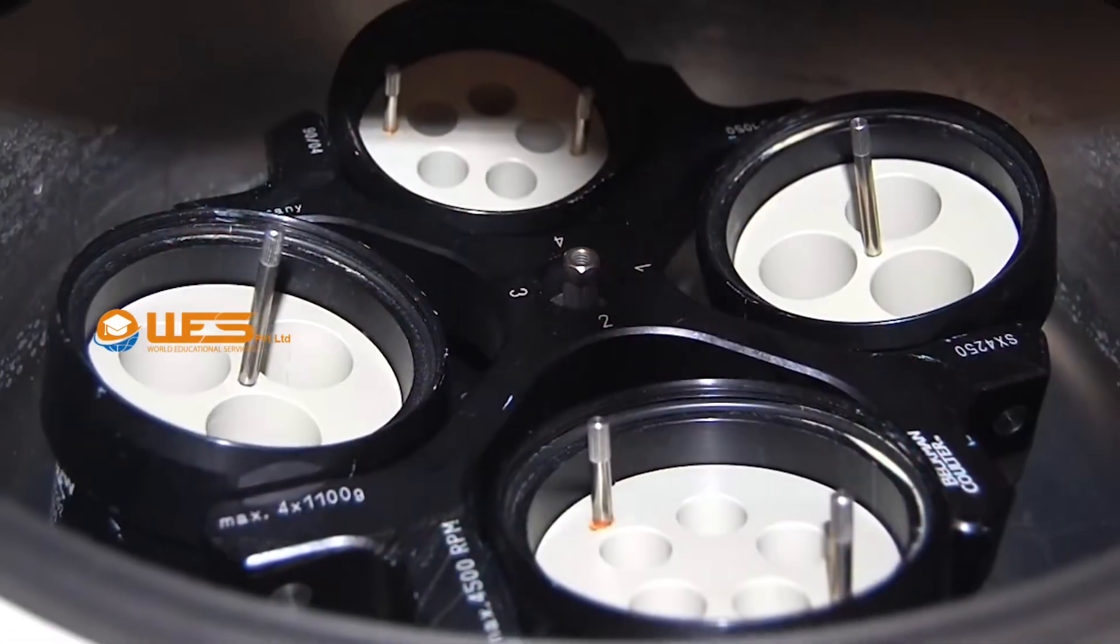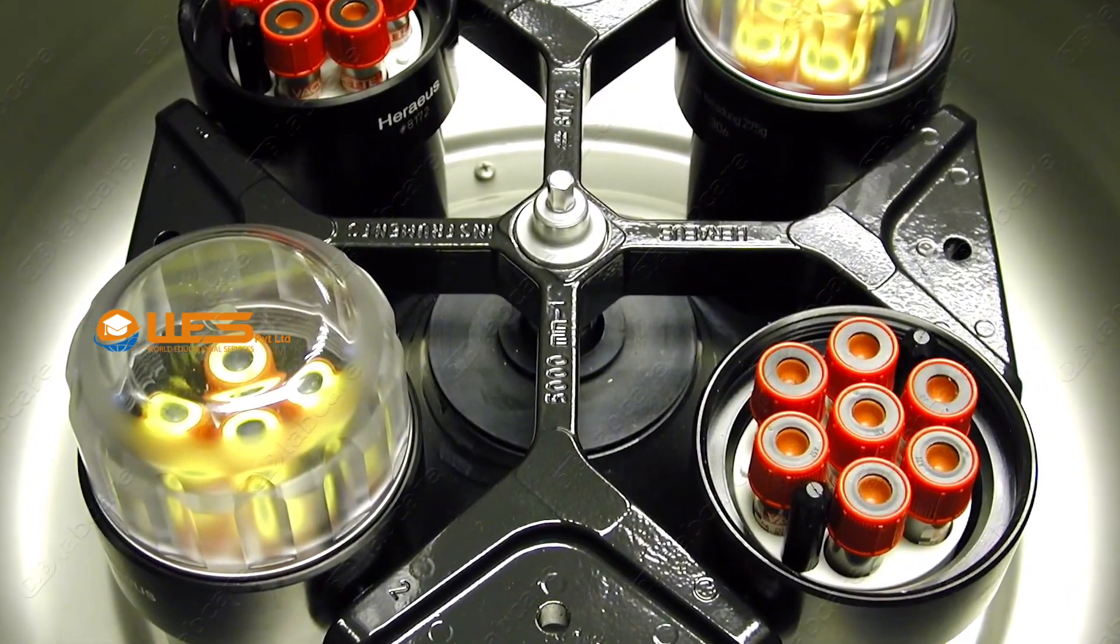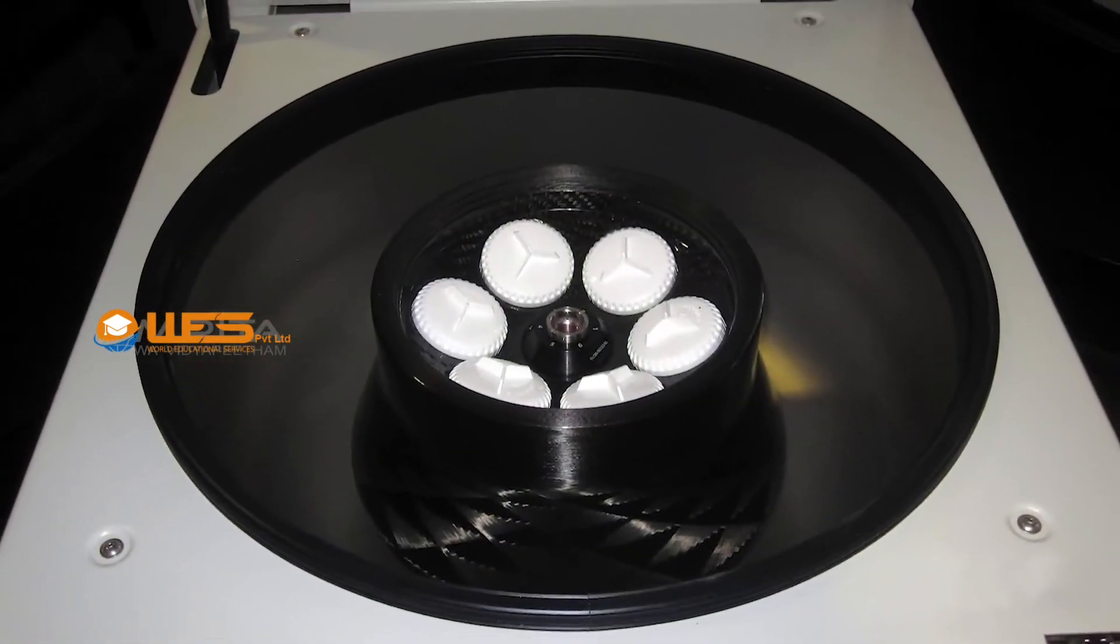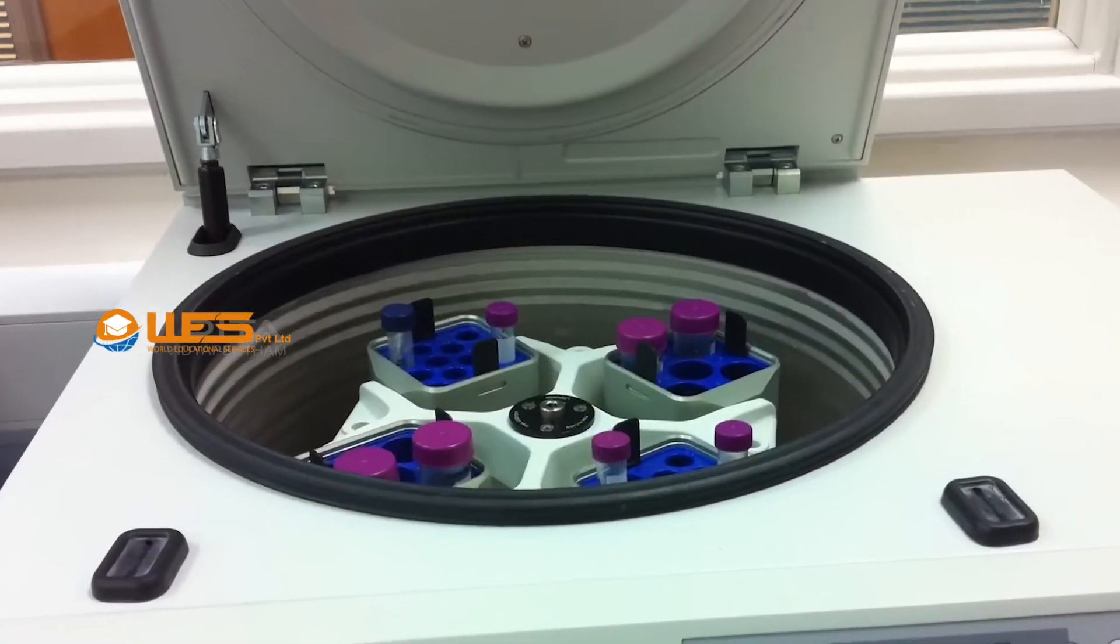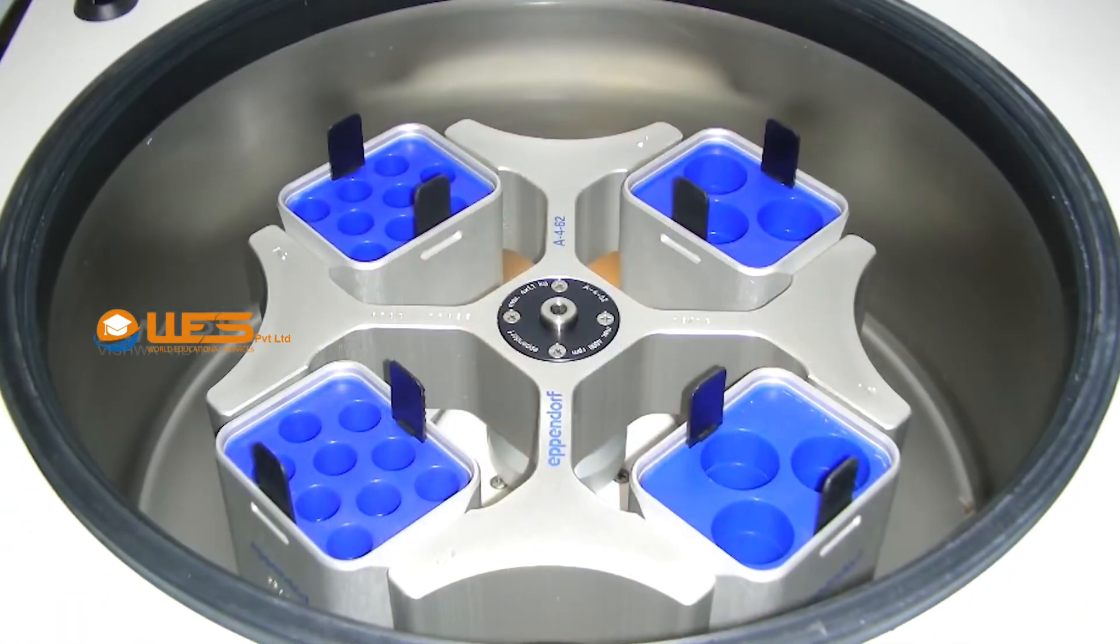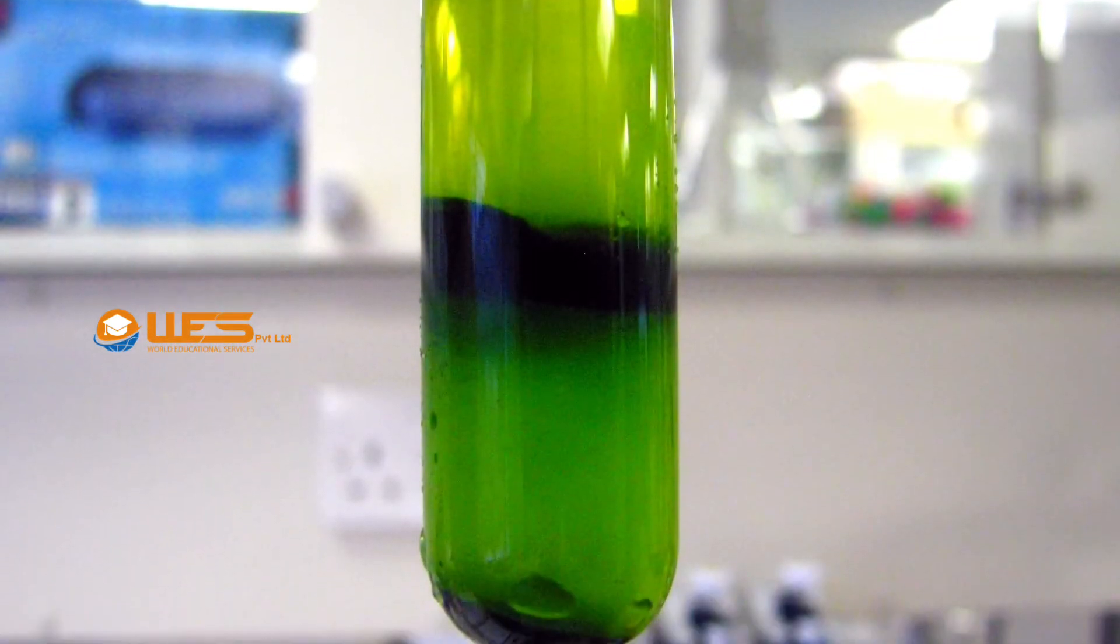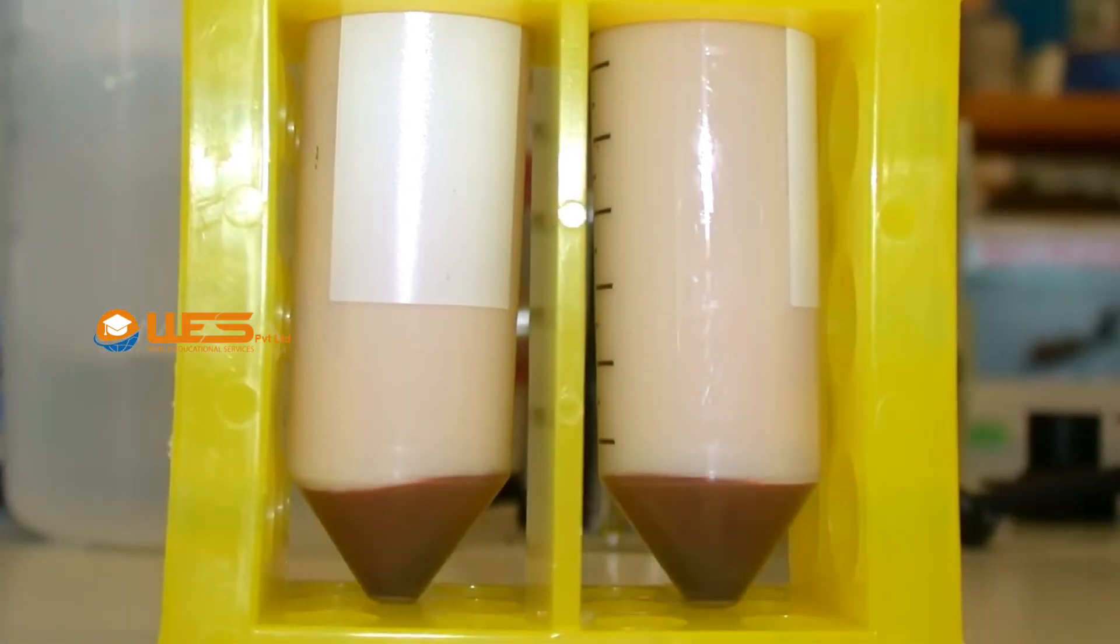On rapid rotation of the rotor, the centrifuge tubes rotate horizontally and due to the centrifugal force, the denser insoluble particles separate from the liquid. When the rotation stops, the solid particles end up at the bottom of the centrifuge tube with the liquid at the top.